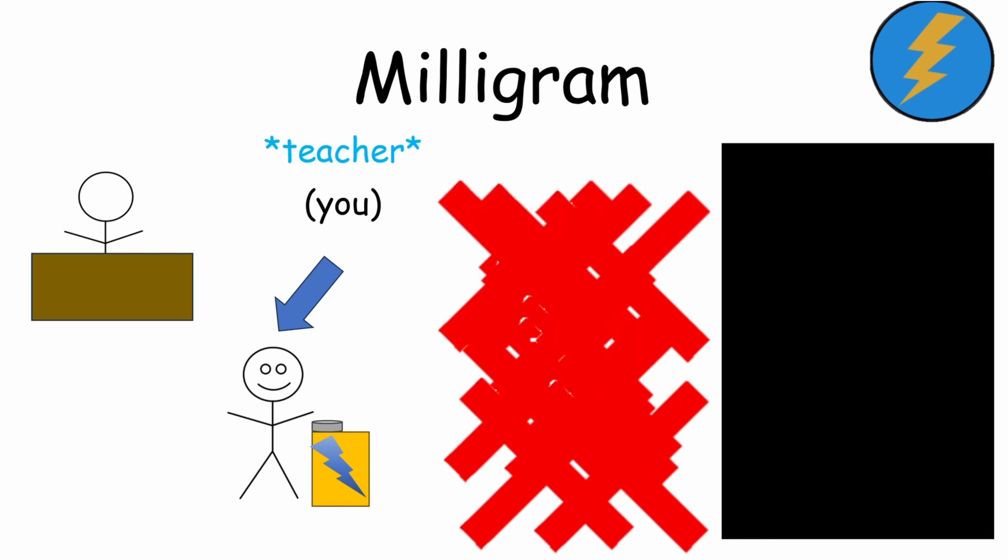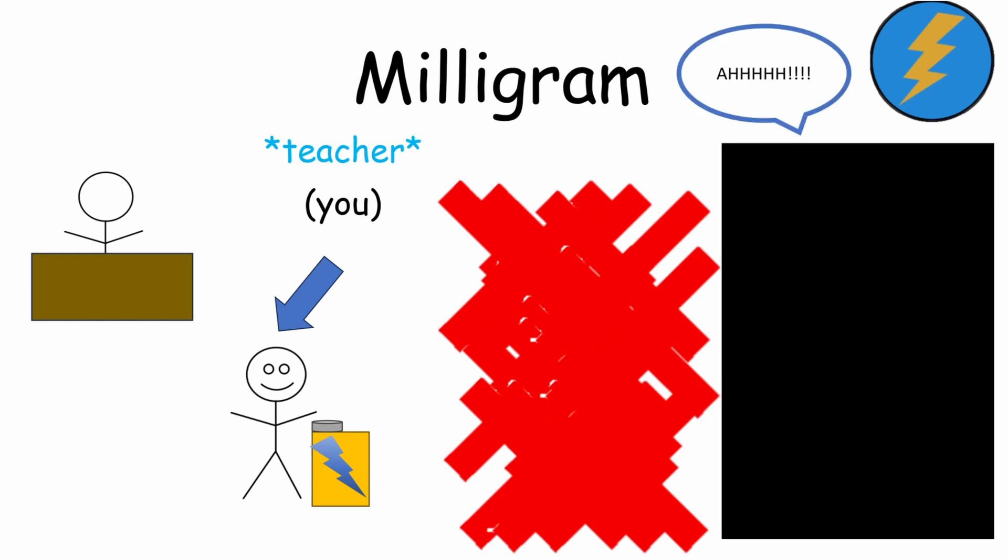Eventually, on the tenth mistake, at 150 volts, you hear shouting from the other room. Eleventh mistake. You press it again. More shouting. The learner makes another mistake.